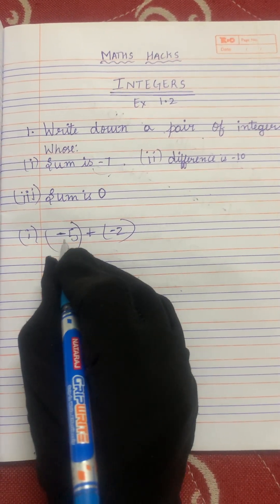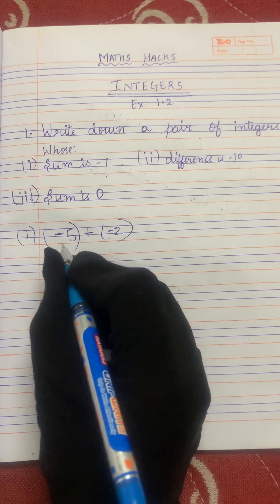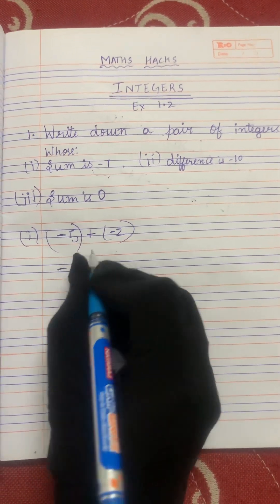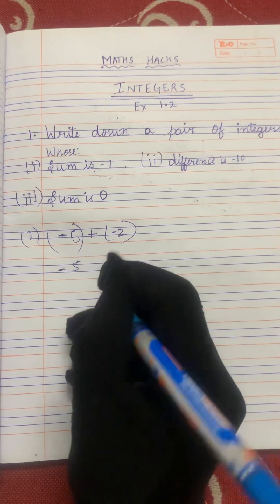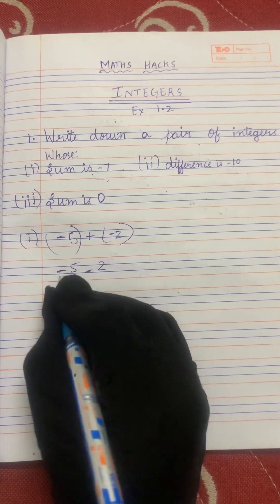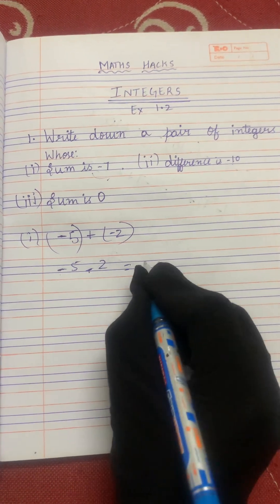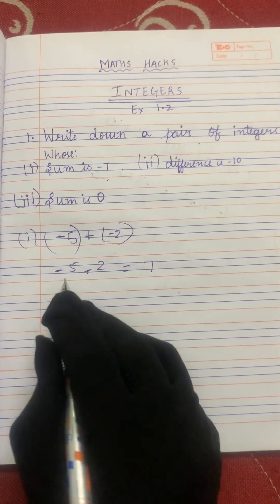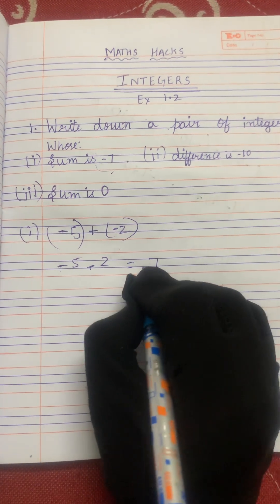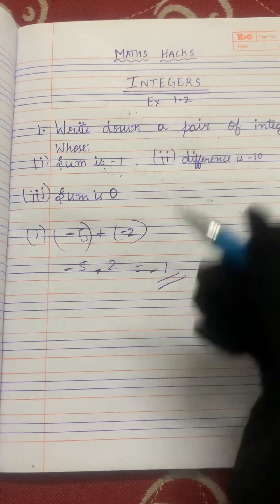Minus 5 plus minus 2. Let's solve this equation. Minus 5 plus minus 2: minus into minus is plus, so 5 plus 2 gives you 7, and the greater number's sign is minus. So we get minus 7. We got the answer: minus 7.